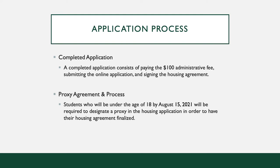The proxy will need to enter the name, email, and relationship information exactly as the student entered it on the housing application in order to sign. Once the proxy has successfully signed the agreement, an email will be sent to the student's UT Dallas email to verify the agreement has been completed. If the proxy has expired, students can log back into their housing application and reset the expiration.